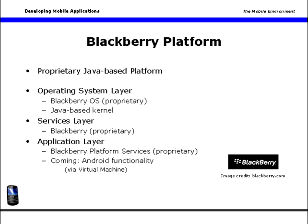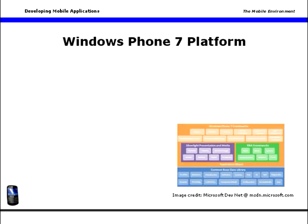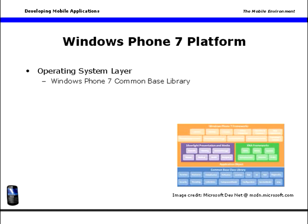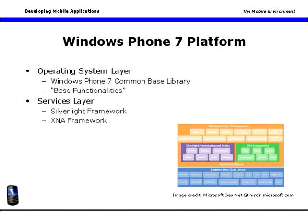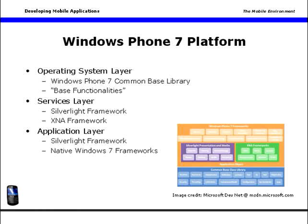The Windows Phone 7 platform is a Microsoft product and uses software standards and functions common to other Microsoft offerings. At the operating system level, it runs a version of Microsoft's Windows 7, integrating a Windows Phone common-based library that provides base functionalities such as security, threading, and other deep OS functions. At the services layer, it uses Microsoft's Silverlight and XNA frameworks to support both app and game development. And at the application layer, it uses Silverlight and some Windows 7 native functions.